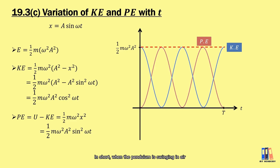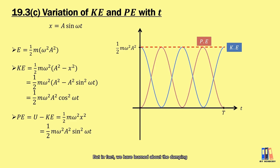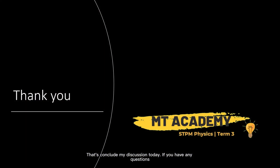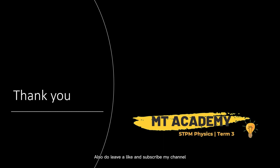In summary, when the pendulum is swinging, we assume no energy loss in the system during analysis. In reality, there is damping, which defines energy loss in simple harmonic motion — but I won't cover that here; you can do your own reading. That concludes today's discussion. If you have any questions, leave them in the comments below. Please leave a like and subscribe to the channel. Thank you, and I'll see you in the next video.